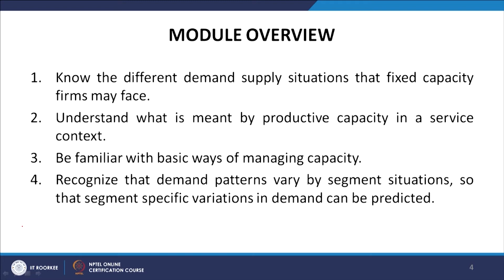Third, we will familiarize ourselves with basic ways of managing capacity when productive capacity is fixed. Fourth, we will recognize that demand patterns vary by segment situations, and segment-specific variation in demand can be predicted. In service contexts, sometimes demand exceeds supply and sometimes supply exceeds demand — unlike products which can be inventoried and are not perishable. Services cannot be inventoried and they are perishable, so we must manage demand and supply in real time.